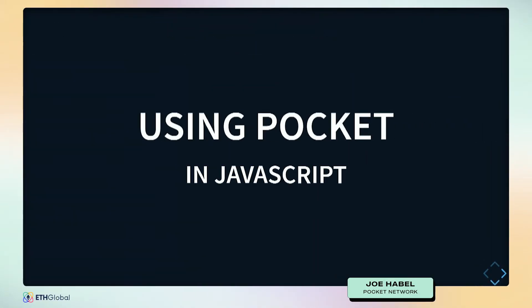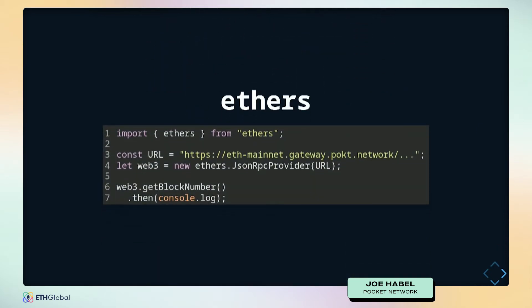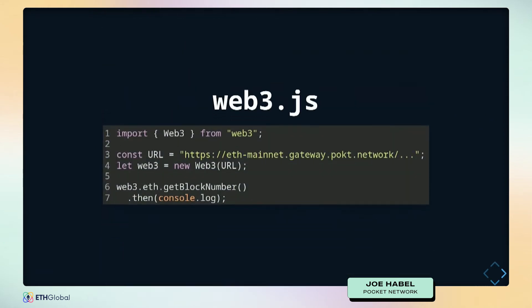What about using it in JavaScript? In ethers.js, it's as simple as using the JSON RPC provider with that URL and you're ready to roll. For Web3.js, it's very similar — you instantiate the Web3 provider just with that Pocket Network URL and you're ready to start getting service.